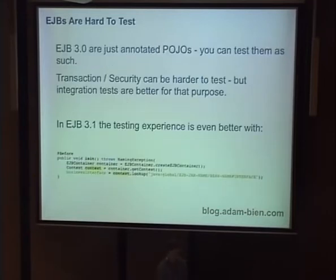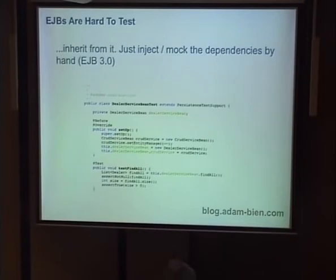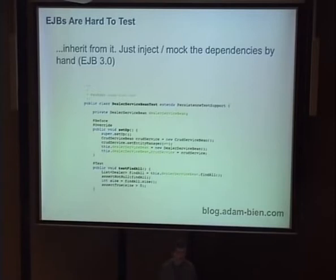So how to test? As I said, EJB3 are just annotated POJOs, so you can test them as such. In other projects, I played a little bit with reflection, and you can very easily inject fields which are private. So there is no big deal — you can inject private fields. If you are interested, come afterwards; I have enough code to show you. And then you can test the EJB.